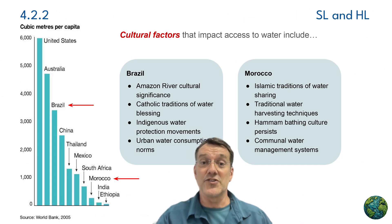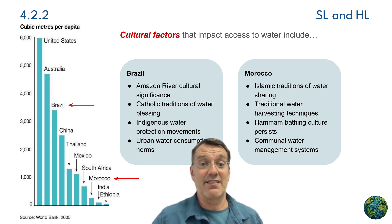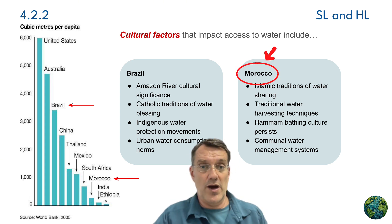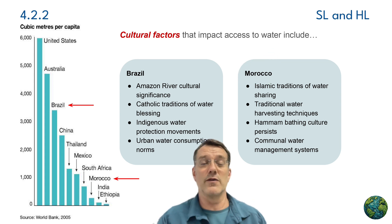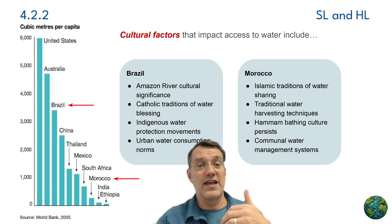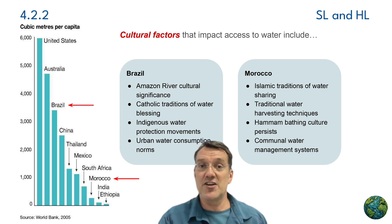Cultural values and traditions shape how societies manage water resources. Brazil's relationship with water is influenced by the Amazon River's cultural significance, Catholic water blessing traditions, and indigenous efforts to protect water resources. In Morocco, Islamic traditions emphasize water sharing, and communities maintain traditional water harvesting techniques alongside hammam bathing traditions. These cultural factors influence how water is consumed, conservation practices, and management approaches. Different cultures can view water as a commodity, a sacred resource, or a basic right — and each perspective leads to different management approaches.